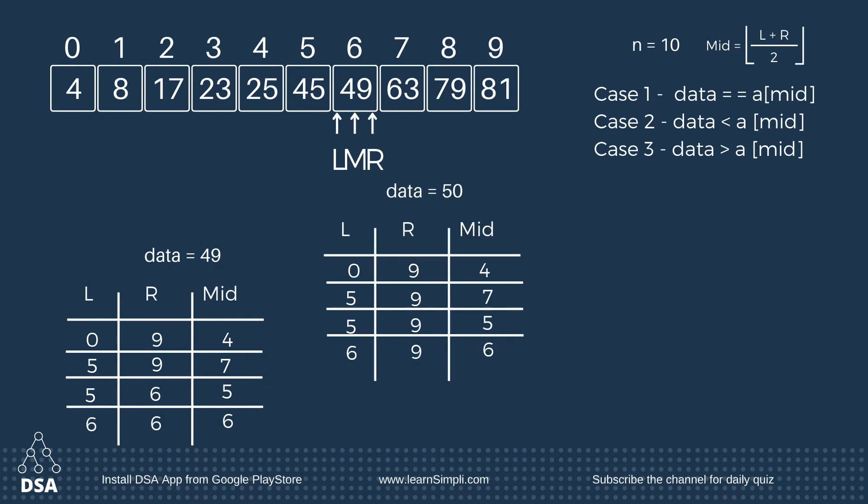As you can see, it is greater than mid, so L becomes mid plus 1. Now this is the stopping condition: if the value of L is greater than the value of R, that is the stopping condition — it means data is not present in the array.